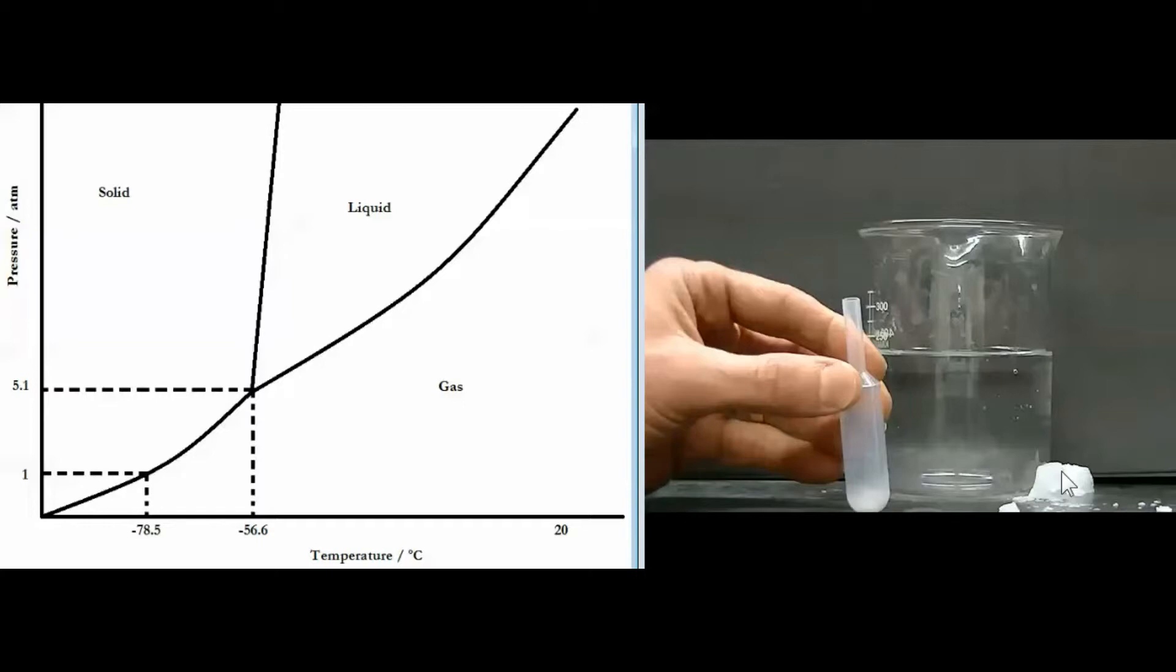Now in the experiment in the video what we were trying to do is we were trying to get carbon dioxide to access the liquid region of the phase diagram. We wanted to melt solid dry ice. So how did we do that? Well you can see from the phase diagram that the only way you can get carbon dioxide to access this liquid region is to get the pressure above 5.1 atmospheres.